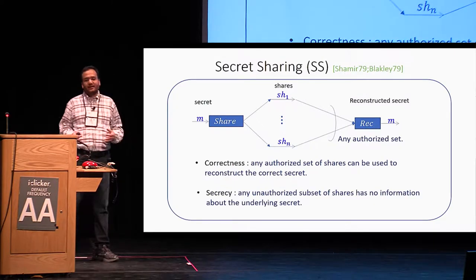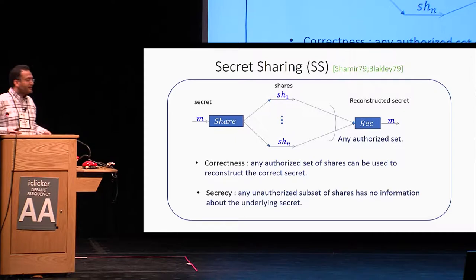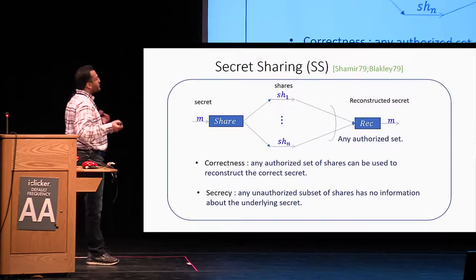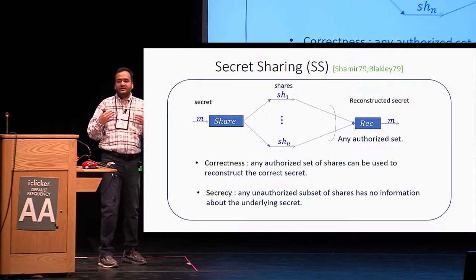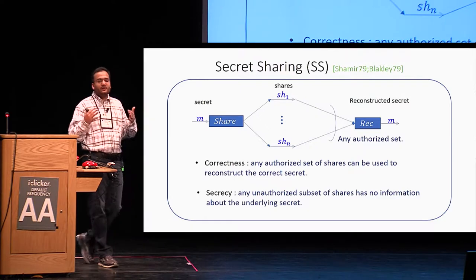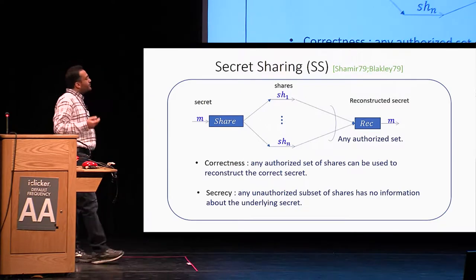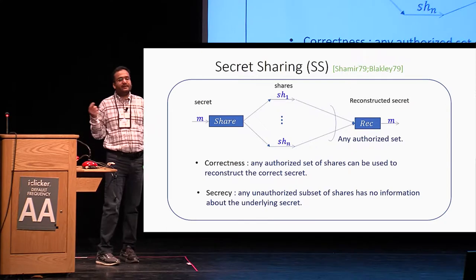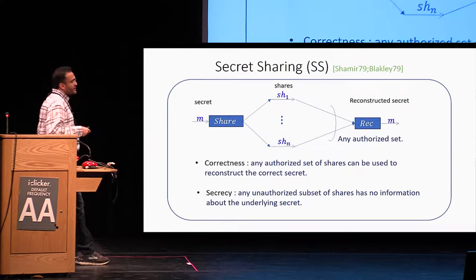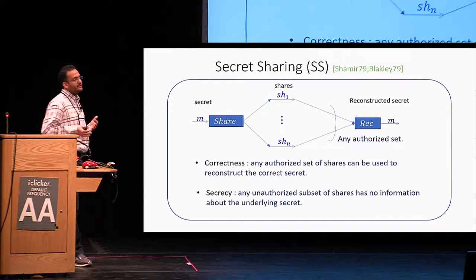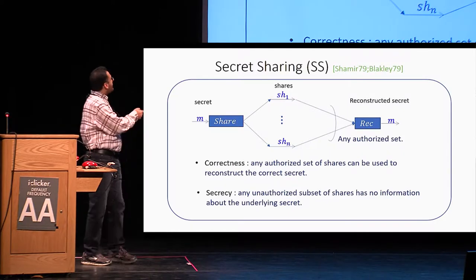Then we have the property of secrecy, which says that any unauthorized subset of shares — if your subset is not big enough — should have no information at all about the underlying secret. So typically in secret sharing, we are concerned with secrecy, with hiding this message m.